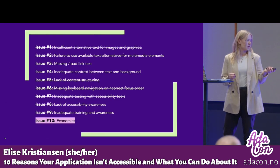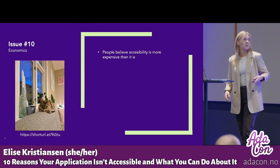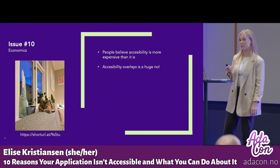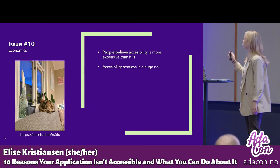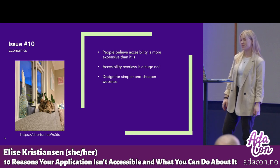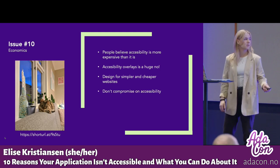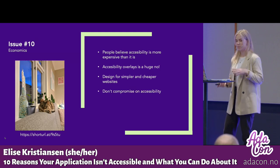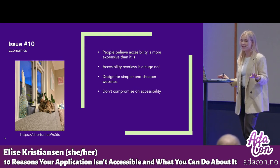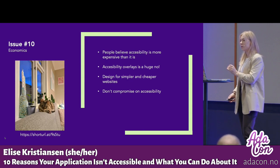For our last issue, issue number ten: economics. People believe it's much more expensive than it is to develop for accessibility, so they fall into the trap of using accessibility overlays instead of coding the website universally from scratch — and that's a huge no. Design for simpler and cheaper websites, keep routines and guidelines in mind, and scale down functionality. Don't compromise on accessibility. A black-and-white website in Times New Roman with all elements listed one after the other is far better than a website that isn't universally designed, because it doesn't exclude anyone.